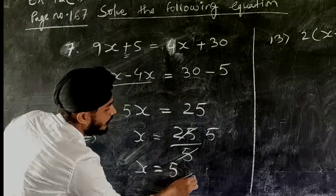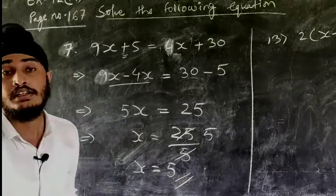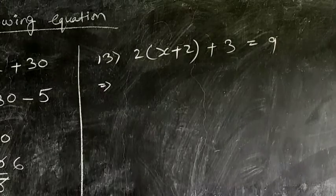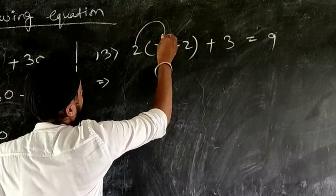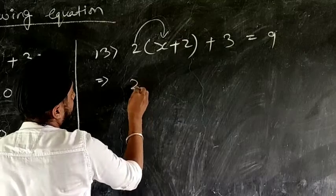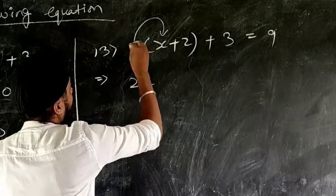Now question number 13. Here first we have to open the bracket. So how to open the bracket? We'll multiply 2 with x, so we will get 2x. Again we'll multiply 2 with 2, so we'll get 4, so plus 4 plus 3 equal to 9.